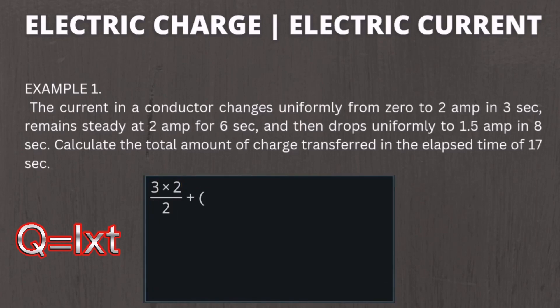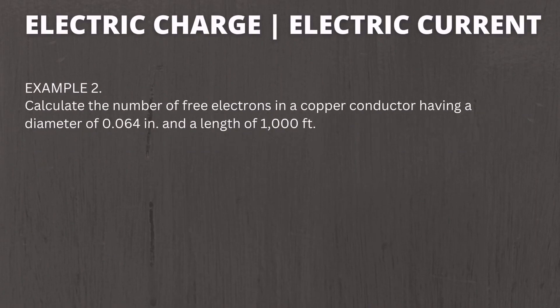The solution is to add the charges created in each interval across the 17 seconds. First, get the average of 0 to 2 amperes, then multiply by 3. Then add 6 multiplied by 2. Lastly, add 8 multiplied by 1.5. The total charge transferred in the elapsed time of 17 seconds is 27 coulombs.